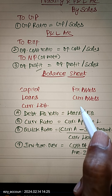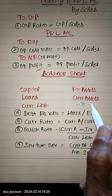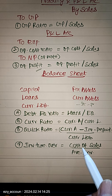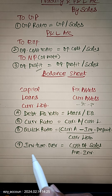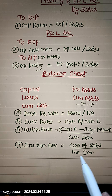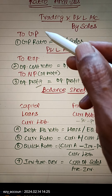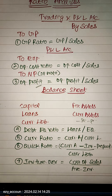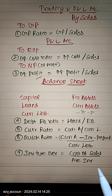Quick Ratio is equal to Current Assets minus Stock minus Prepaid, giving Quick Assets, divided by Current Liabilities. The next one is Inventory Turnover Ratio: Cost of Sales equals Opening Stock plus Purchases minus Closing Stock. Cost of Sales divided by Average Inventory, where Average Inventory equals Opening Inventory plus Closing Inventory divided by 2.